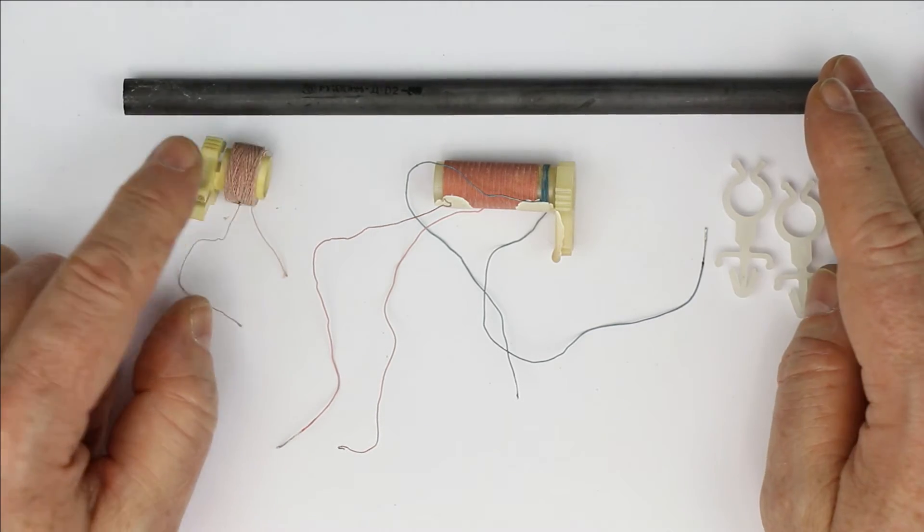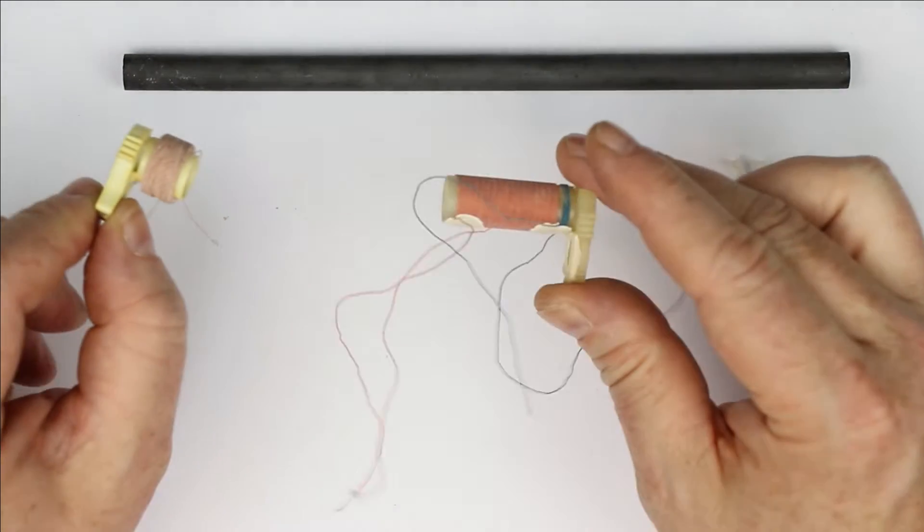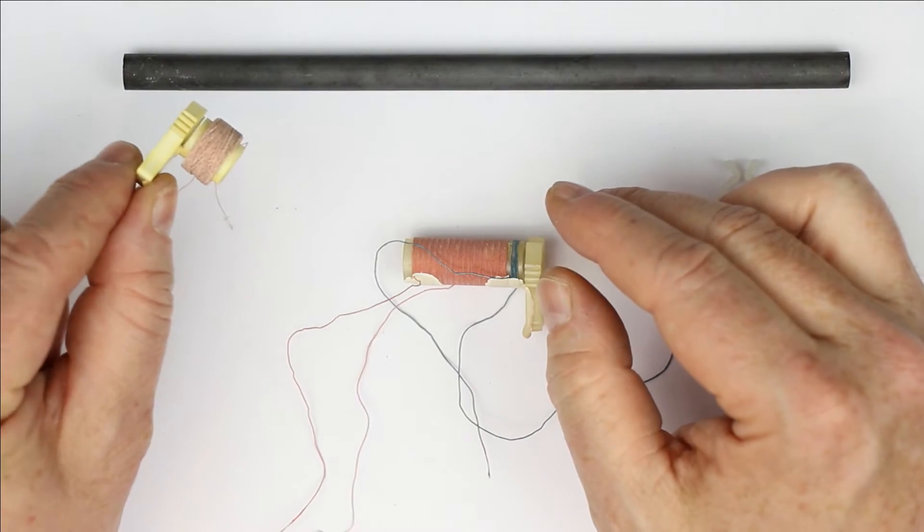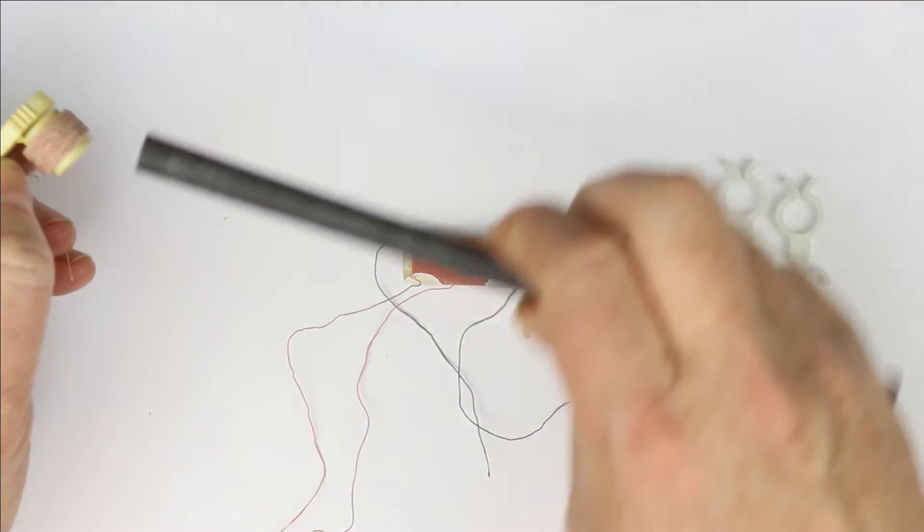First of all, we have two coils. This one is for the long wave receptions.